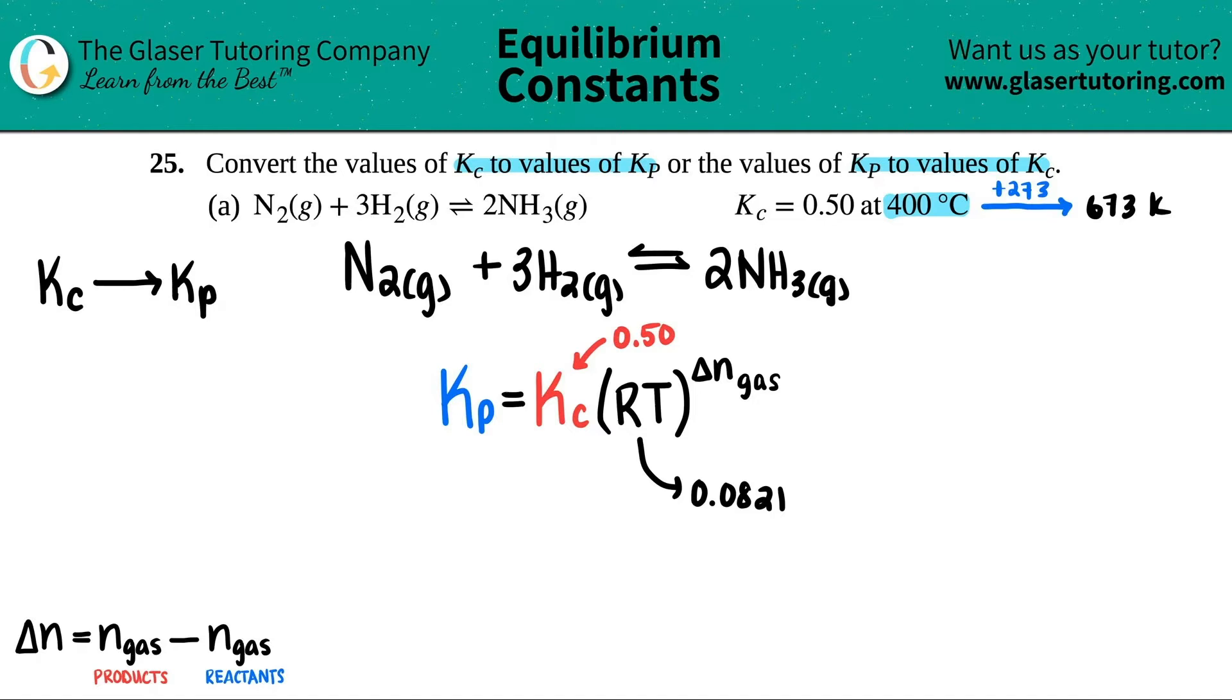And that's the number that's going down here: 673 Kelvin. Last thing is we got to find out what that delta n gas value is. I gave the formula over here. Delta n, remember just like delta T, it's change in one thing to another. In this case it's the n gas of the products minus the n gas of the reactants. Remember, n just means moles - n is the unit that they use for moles. So it's products minus reactants.